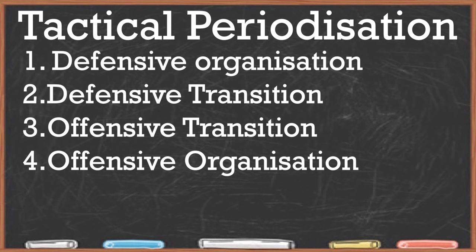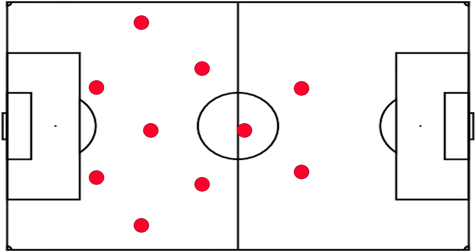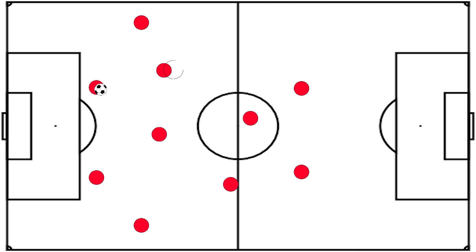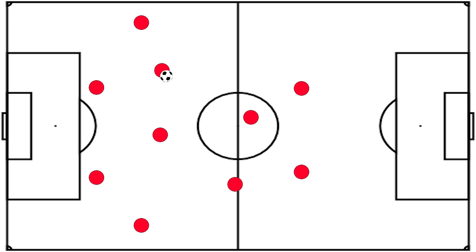Let's start with how United lined up in their offensive organisation during the build-up phase, and how Chelsea chose to defend this. When building up, United used their midfield numbers to their advantage. One of their wider midfielders, usually Pogba, would drop deeper alongside Matic to provide passing options and create passing lanes for centre-backs, meaning their midfield had a double pivot. By dropping deeper, Pogba also freed up the left-hand channel for Luke Shaw to advance further forward.